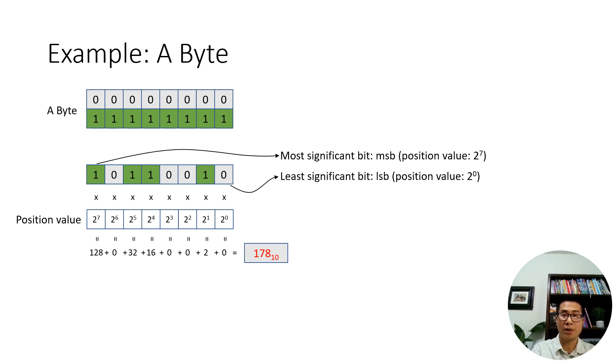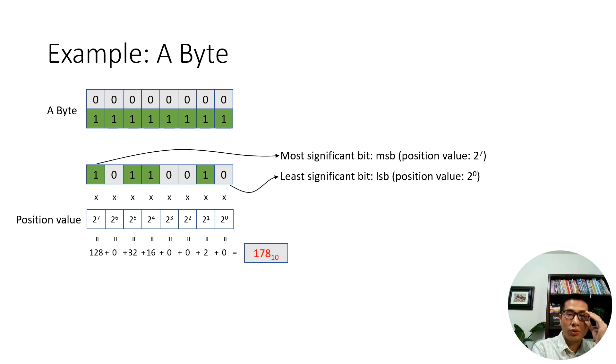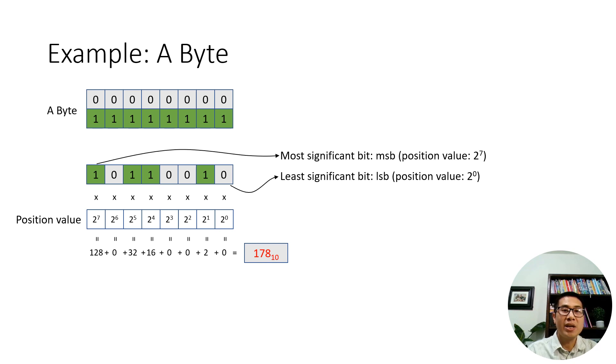So this binary string is the byte representation of the number 178 — that is how a computer uses one byte to represent a number.